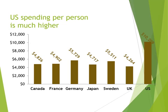The U.S. is spending more on healthcare per person than any other developed country in the world. Canada spends about $5,000, France about $5,000, Germany a little over $5,500, Japan just under $5,000, Sweden right at $5,500, and the UK right above $4,000. We are spending almost $10,500 to $11,000 on healthcare per person.